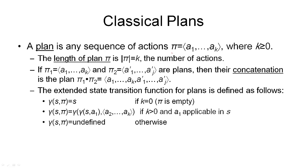A plan is a sequence of actions, a1 through ak. We're using the pi symbol here to denote the plan, and the sequence consists first of the action a1, then of the action a2, and so on until we reach the action ak, and k must be greater or equal to 0. So the plan can be empty and contain no actions.